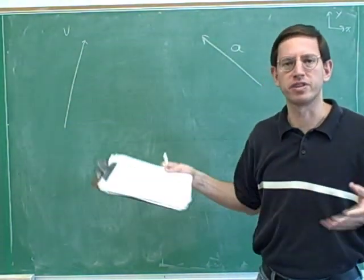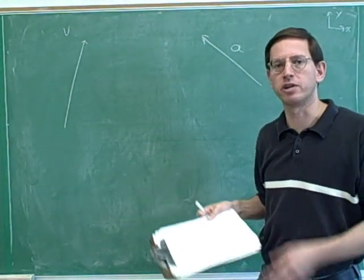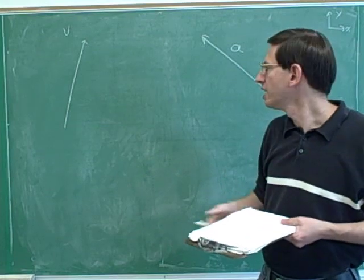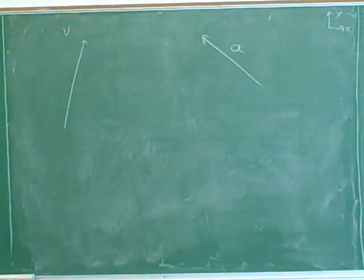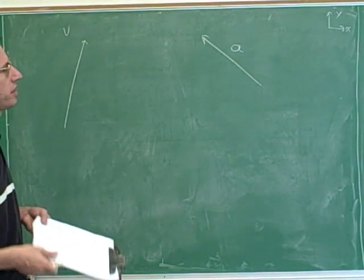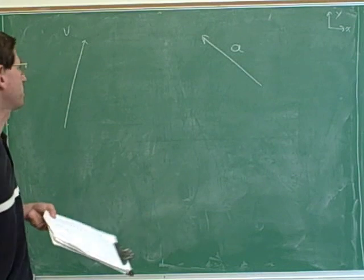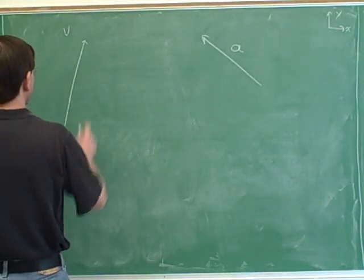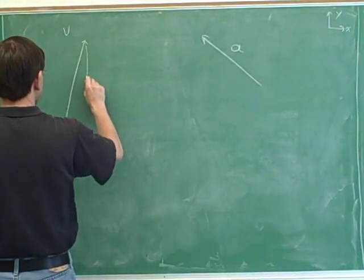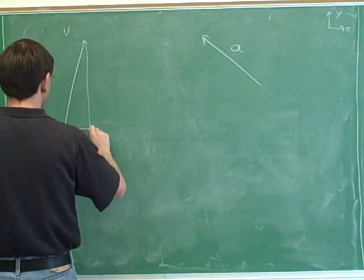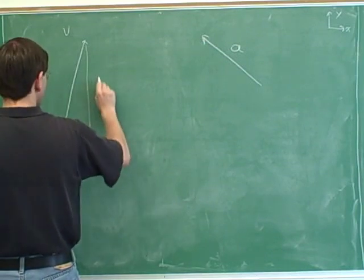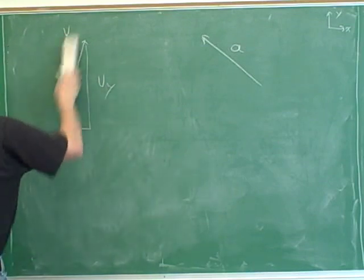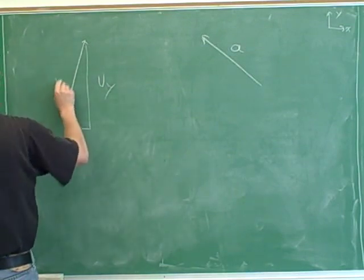Here's another example of the same type. Again, please pause the video and write down everything you can about this object using the same skills. We can't interpret the overall vectors — we have to break them into components. So let's draw a right triangle that has the overall vector as its hypotenuse and label the sides.